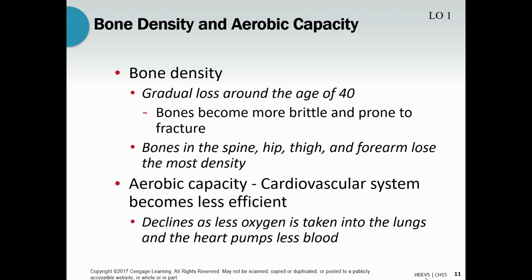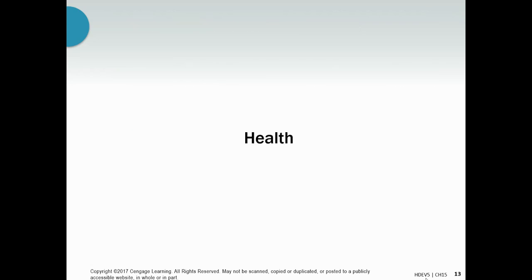Aerobic capacity also becomes less efficient. As you get older, you take in less oxygen into the lungs, so there's less oxygen getting to the heart and other parts of your body. Tissues in the body also become less capable of taking up glucose from your bloodstream, and that glucose will turn to fat if you don't get rid of it, because your muscles are just not as good at taking in glucose.